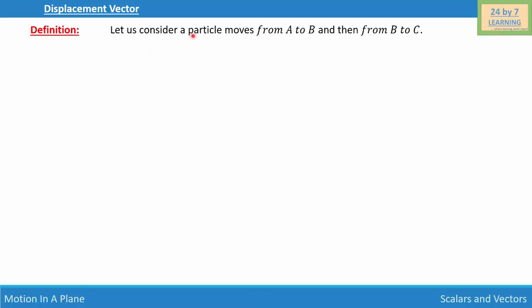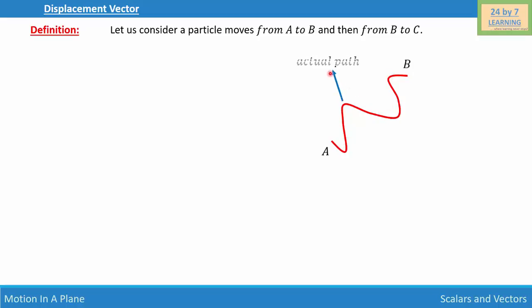Let us consider a particle that moves from A to B and then from B to C. To explain the displacement vector, I'm going to consider a particle moving along the path A-B and B-C. The particle starts at point A and the final point for path A-B is point B. The path along which the particle is moving is known as the actual path.